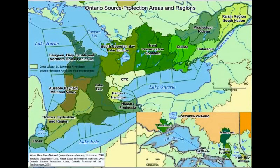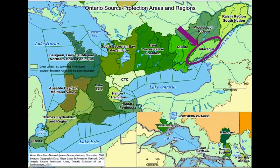Under the Clean Water Act, 19 source protection areas or regions have been established in Ontario as shown on this map. The purple arrow points to the Cataraqui Source Protection Area where your municipality is located. Source protection plans apply to every area or region and aim to accomplish two main objectives: to protect existing and future drinking water sources, and to ensure that for every area that has an activity that is or would be a significant drinking water threat, the activity never becomes a significant drinking water threat, or if the activity is already taking place when the plan comes into effect, then the activity ceases to be a significant drinking water threat.